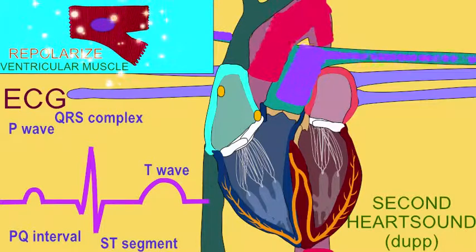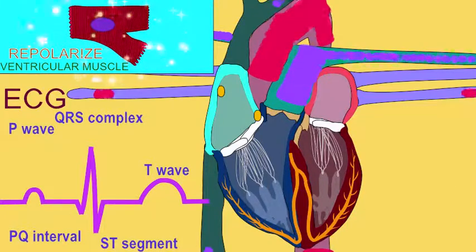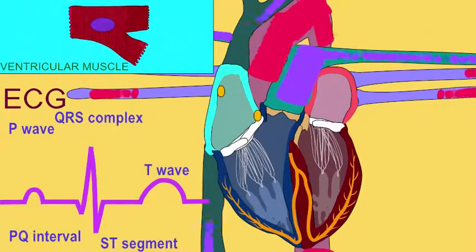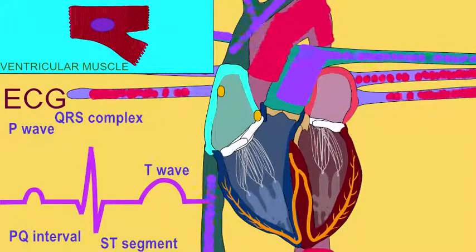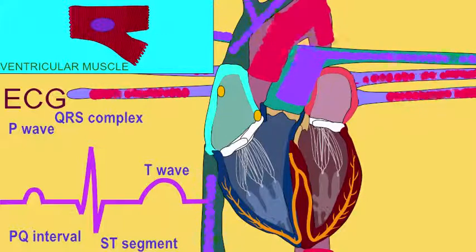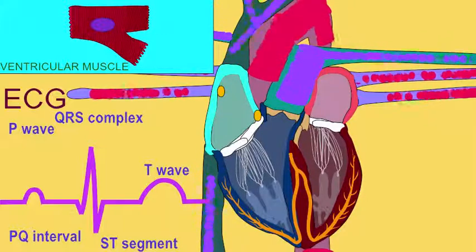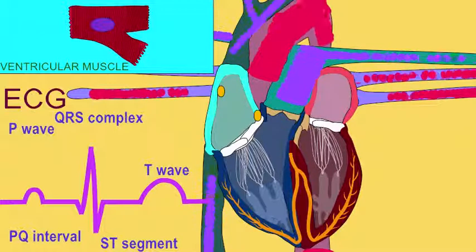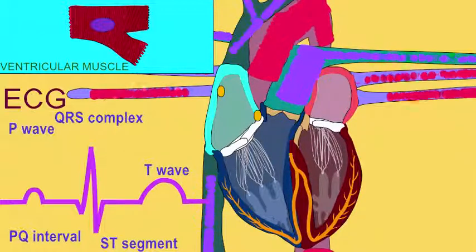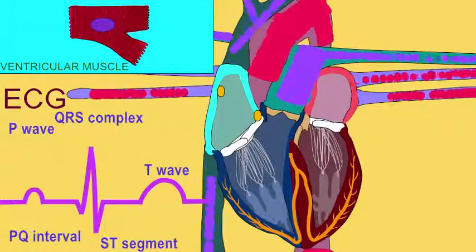At the end of this cardiac cycle, there are no new electrical events. All four chambers are in diastole, all four valves are closed, and thus a new cardiac cycle can begin.